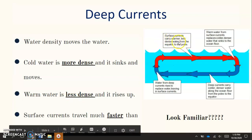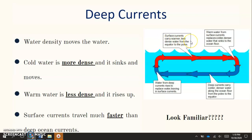So we have our surface currents that carry the warm less dense water from the equator to the poles and then the warm water from the surface currents will replace cold dense water and it will sink to the ocean floor.